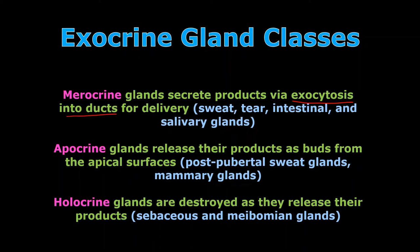Apocrine glands are different — they release their products as buds. The cell becomes damaged a little bit as it buds off the apical surface, the top exposed surface. The top part of the cell is actually removed, then it will repair itself as it releases more buds. When you hear apocrine glands, think something that's post-pubertal — many do not come online until the pubertal event has occurred. Post-pubertal sweat glands and mammary glands are the two major examples of apocrine glands.